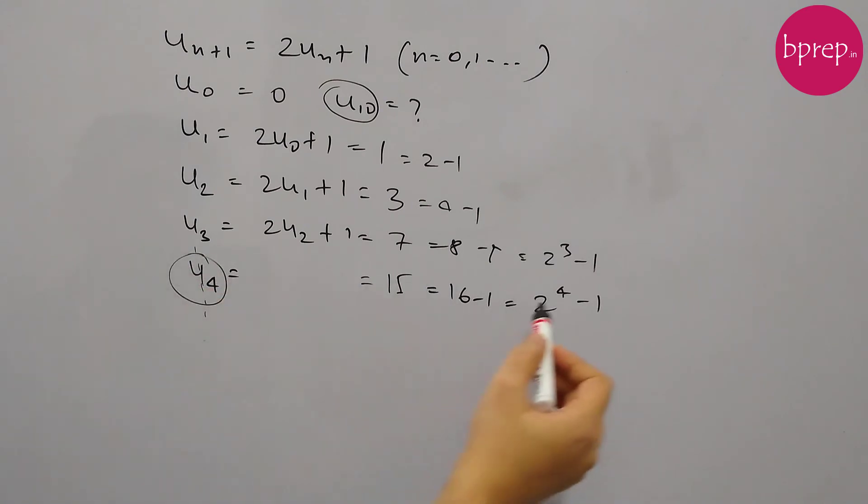So 16 is 2 to the power 4 minus 1, 8 is 2 to the power 3 minus 1, and so on. So u_4 is 2 to the power 4 minus 1, u_3 is 2 to the power 3 minus 1. We've got the pattern, so now we need to find out u_10. So you can say u_10 will be 2 to the power 10 minus 1.